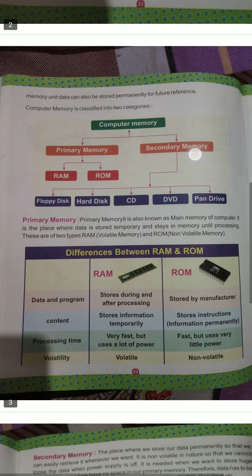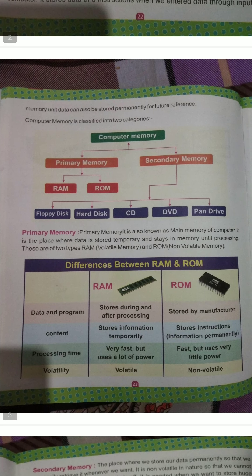Primary memory is divided into two parts: RAM and ROM. Secondary memory is divided into many parts — we can store data in many different places. Today we have introduced this topic, and tomorrow we will describe the memory parts in further detail.